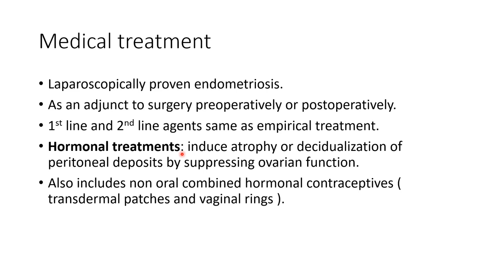Now for hormonal treatments - how do they work? They induce atrophy or decidualization of peritoneal deposits by suppressing ovarian function. In our body, hormone levels are not constant throughout the cycle; in the first half estrogen is higher, and in the second half progesterone is higher. Our cycle works by negative and positive feedbacks. When we give hormonal treatment, the levels remain at an equal plateau throughout the cycle, suppressing natural estrogen, progesterone, and ovulation. This ends the feedback cycle and suppresses ovarian function, causing atrophy or decidualization where endometriosis deposits are.